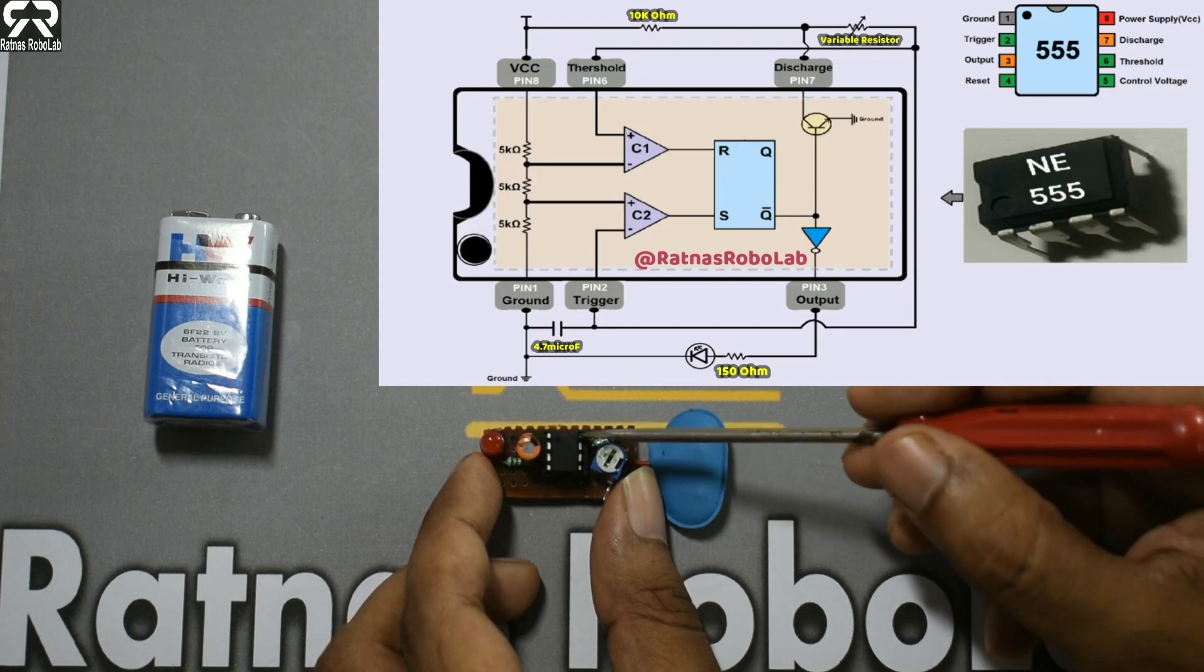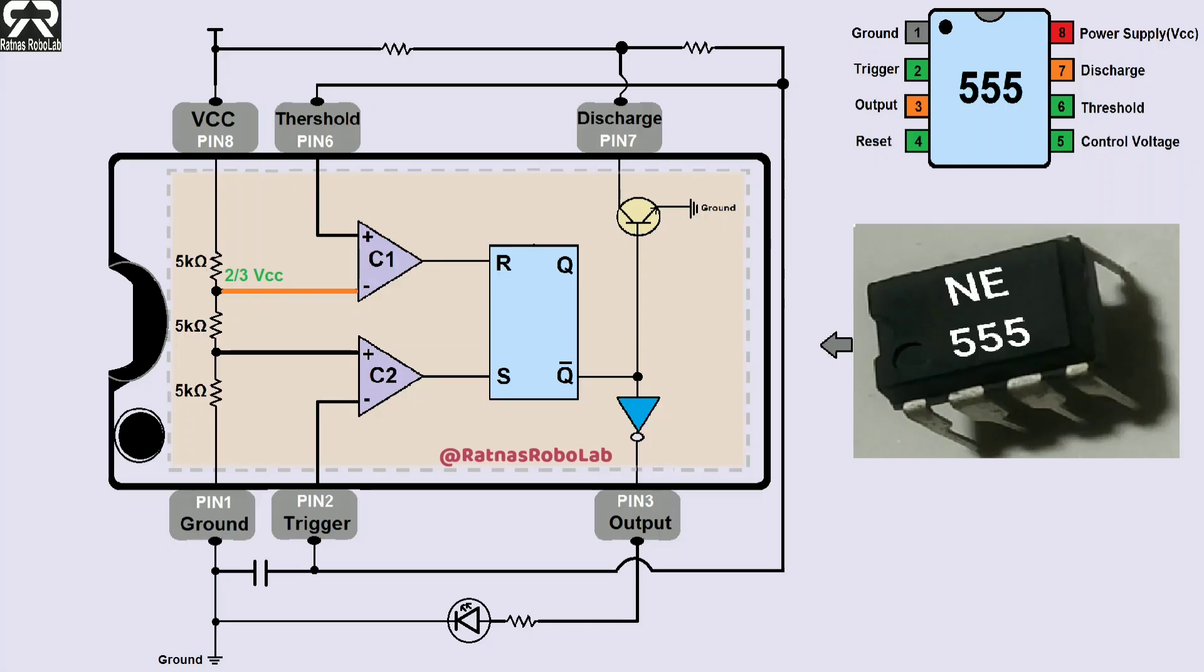Let's take a look at how astable multivibrator works internally. We have already discussed in the previous video that power supply or Vcc is divided into 2 parts: 2/3 Vcc and 1/3 Vcc. If power supply voltage is 9V, then the negative terminal of comparator 1 gets 2/3 Vcc equals 2/3 times 9 equals 6V, and the positive terminal of comparator 2 gets 1/3 Vcc equals 1/3 times 9 equals 3V.